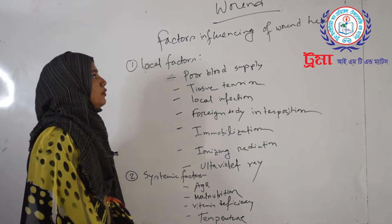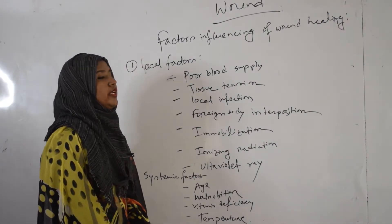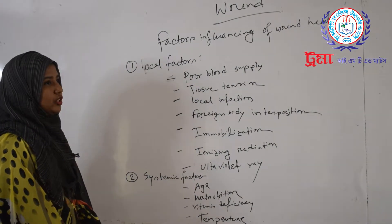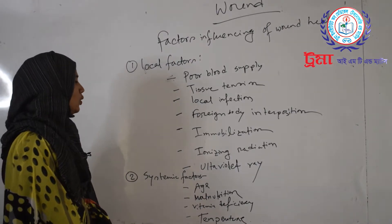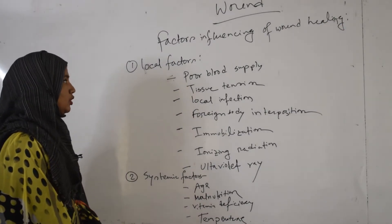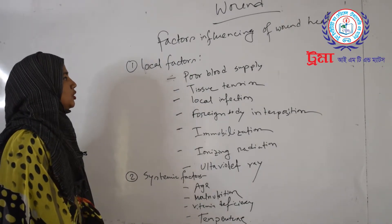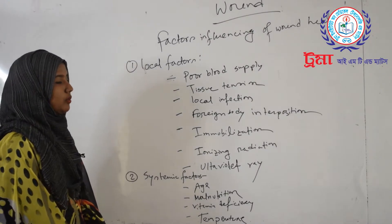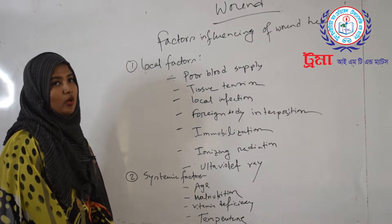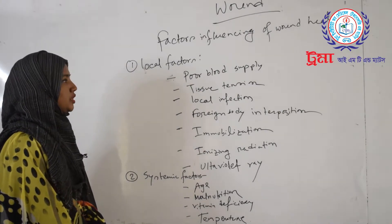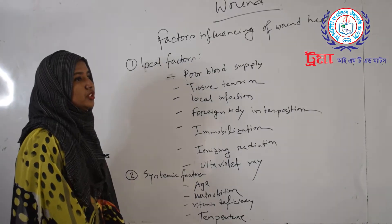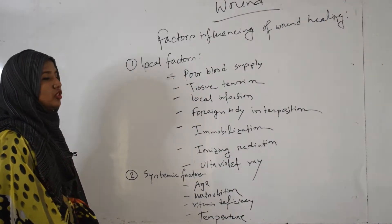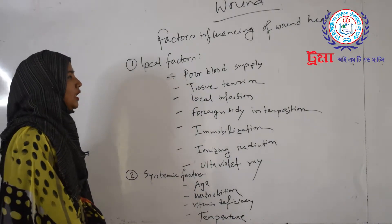Factors influencing wound healing. A wound is a break in the continuity of superficial tissue or skin and mucous membrane. Local factors include: injured blood supply — if a patient has poor blood supply, wound healing will be very slow. Tissue tension affects wound healing. Local infection also plays a role.